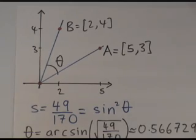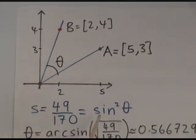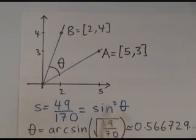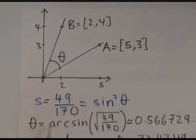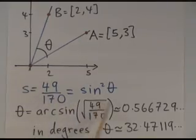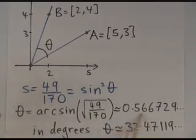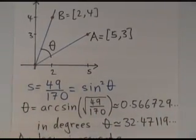What is the angle between these two lines? Well, the relation is that sine squared of that angle is the spread. So the angle is the arc sine of the square root of this expression. And you can calculate with a calculator that,